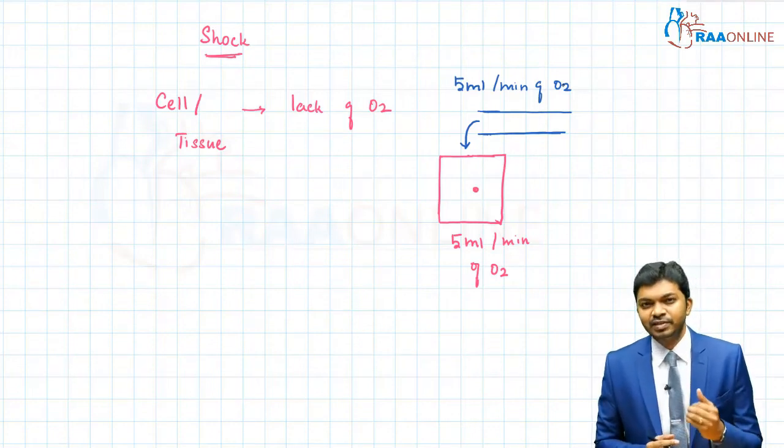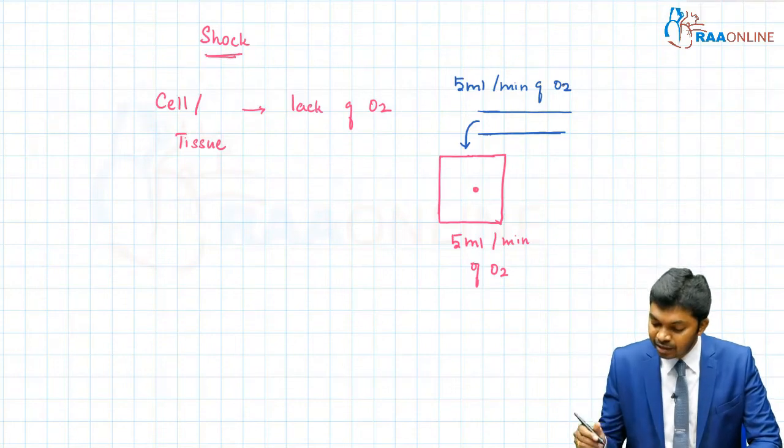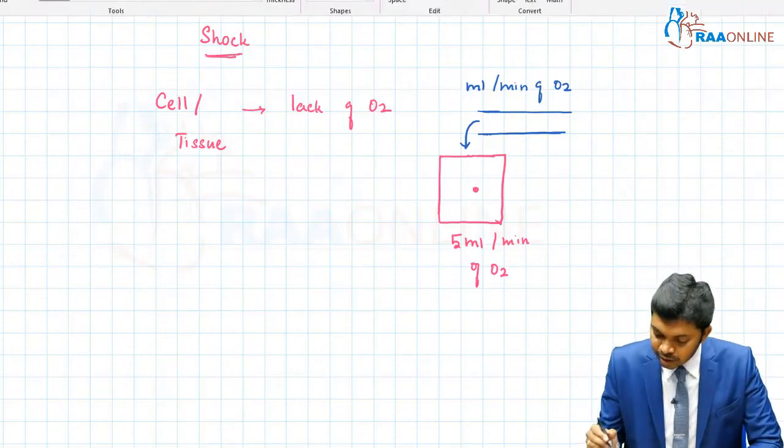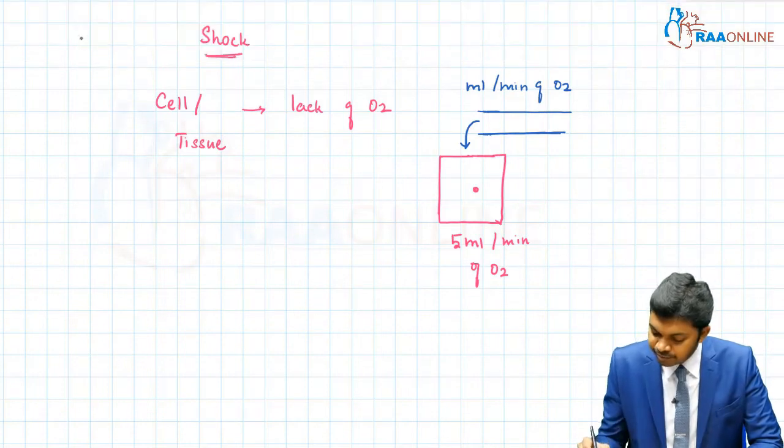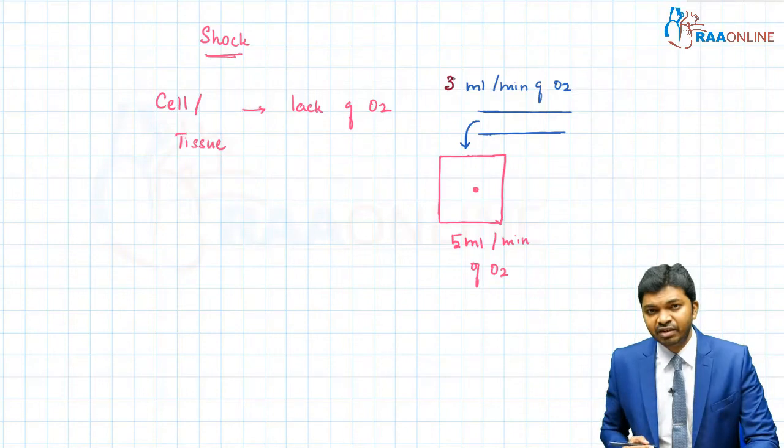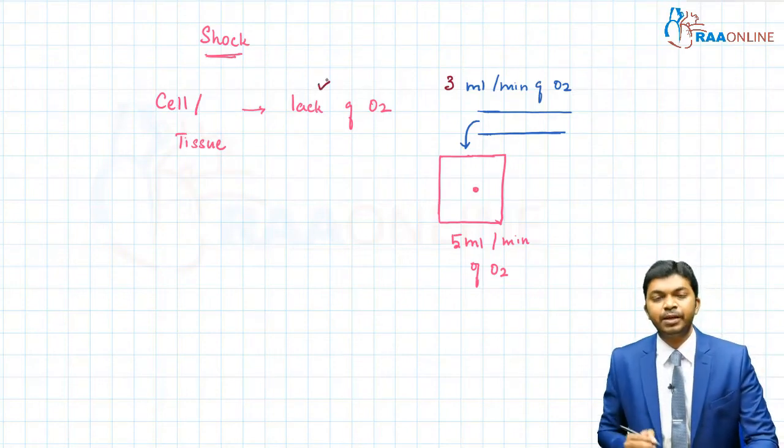When I say the cell is suffering from lack of oxygen, it means either the supply is lesser. Instead of the original condition, the supply is now less. The demand is 5 ml and the supply is 3 ml. This is a lack of oxygen to the cell.